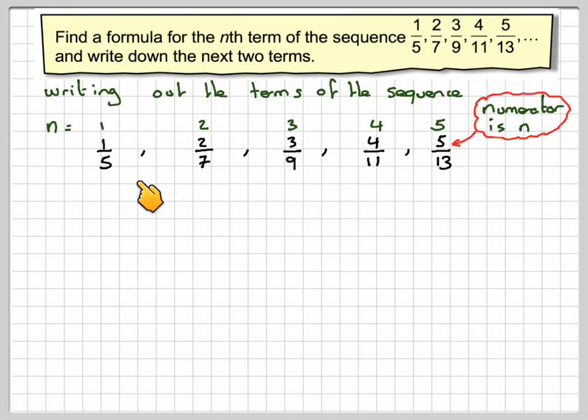Right, now looking just at the denominator: 5, 7, 9, 11, and 13. We see we're going from 5 to 7, we add 2. Again, from 7 to 9 we add 2, from 9 to 11 we add 2, and then from 11 to 13 we add 2.